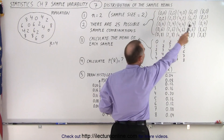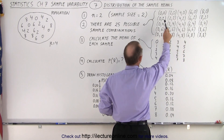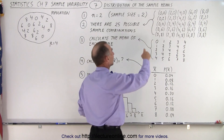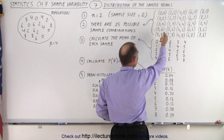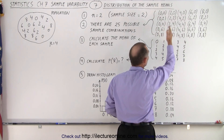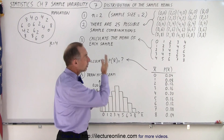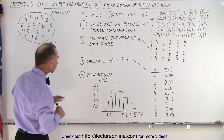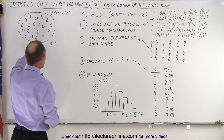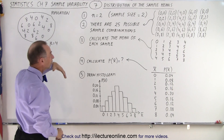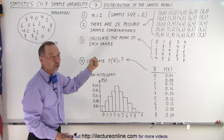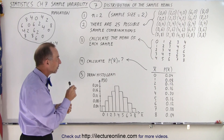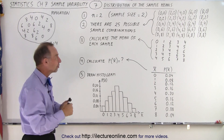We've written on the board all 25 possibilities. We draw two numbers at random — they could both be 0, or one could be 0 and a 2, a 0 and a 4, a 0 and a 6, a 0 and an 8, or 2 and 0, 2 and 2, 2 and 4, and so forth. Those are the 25 possibilities based on this population. Since there's an equal number of each number in the population, the probability of drawing any one of those 25 different possibilities is equal to one another — 1 out of 25, or 0.04.